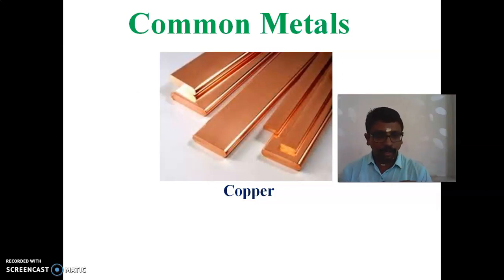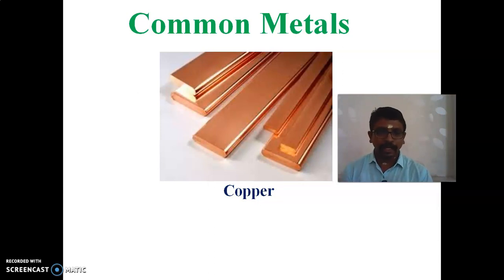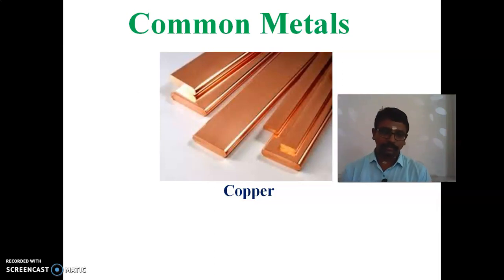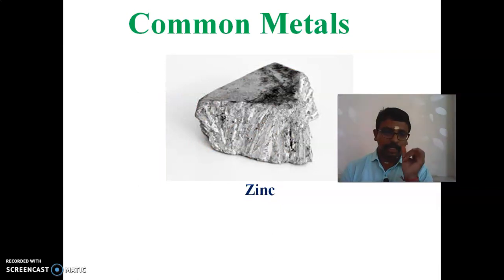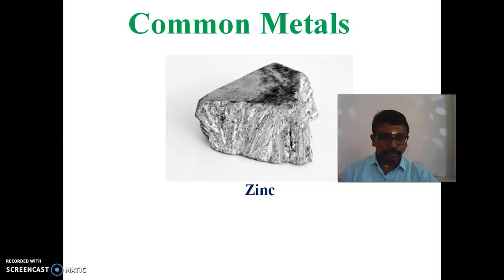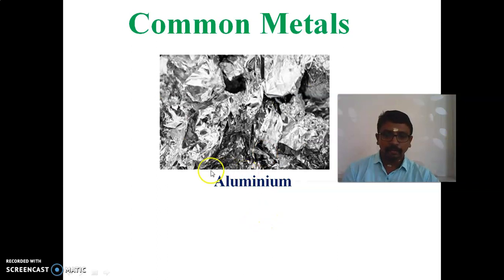The term alloy means the mixing of two or more metals. Alloying increases hardness and density. That is why copper is used in various alloys. And zinc — the symbol for zinc is Zn. It is also lustrous and very hard. And aluminium — what is the symbol for aluminium?